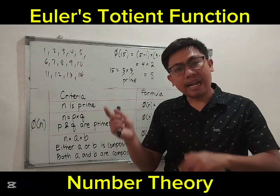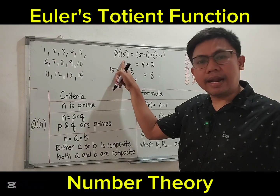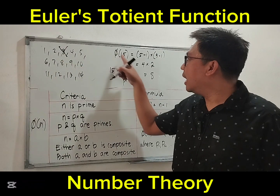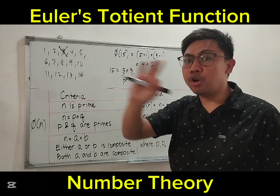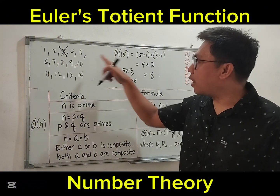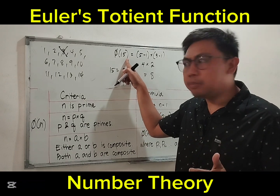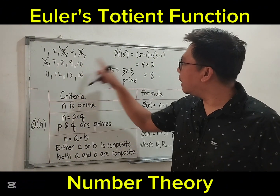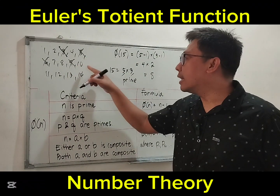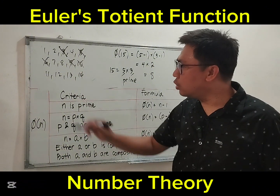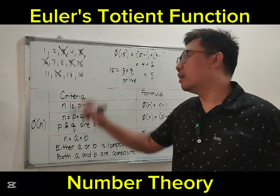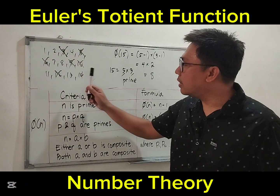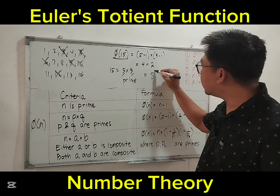1 and 15: relatively prime. 2 and 15: relatively prime. 3 and 15: not relatively prime — GCD is 3, so cross out 3. 4 and 15: relatively prime. 5 and 15: not relatively prime — both divisible by 5. 6 and 15: both divisible by 3, cross out. 7: good. 8: good. 9 and 15: both divisible by 3. 10 and 15: both divisible by 5. 11: good. 12 and 15: both divisible by 3. 13 and 15: relatively prime. 14 and 15: relatively prime. Counting: 1, 2, 3, 4, 5, 6, 7, 8 — our answer is correct, phi of 15 equals 8.